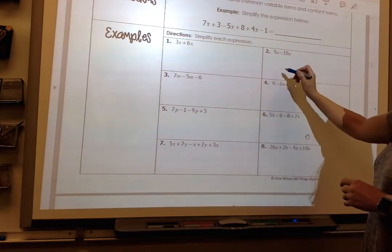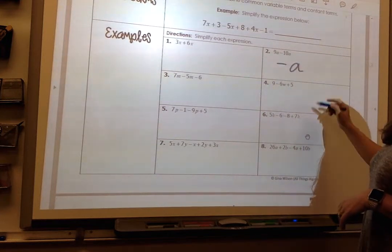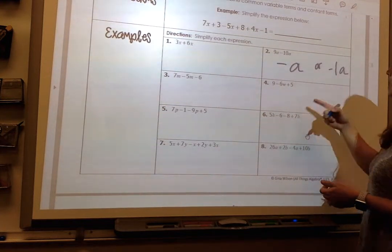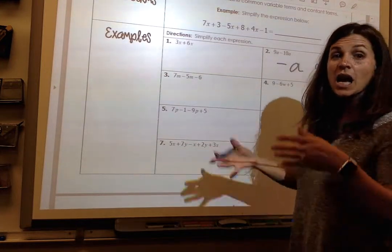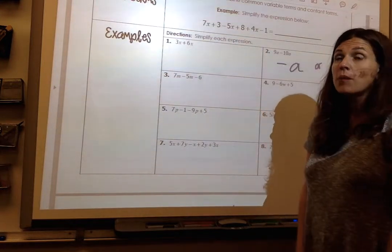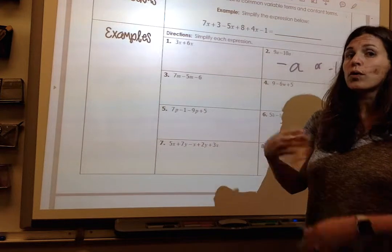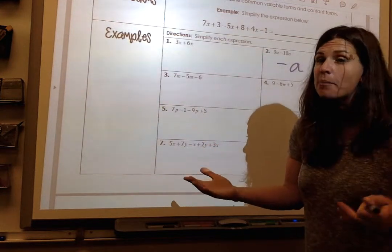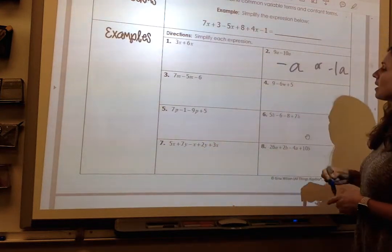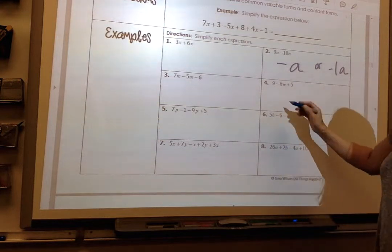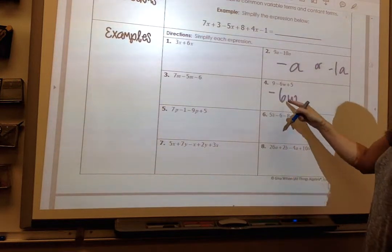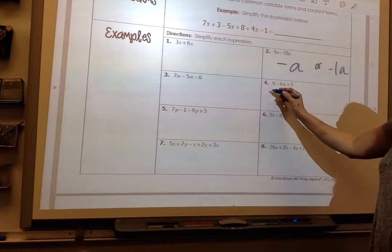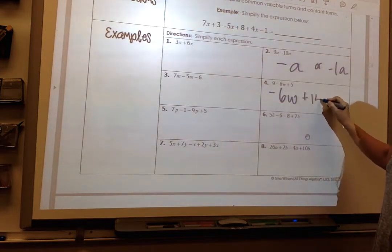So if I take these even ones, we'll do the even ones together in the notes. I have a 9a and a negative 10a, which is negative a. I can say negative 1a, but that's like me saying an apple versus mom told me to go get one apple. Or did she just say, can you go grab me an apple? It means the same thing. Here on number 4, my variable term can't be combined with another variable, so I have negative 6w, and then I combine 9 and 5 to be plus 14.